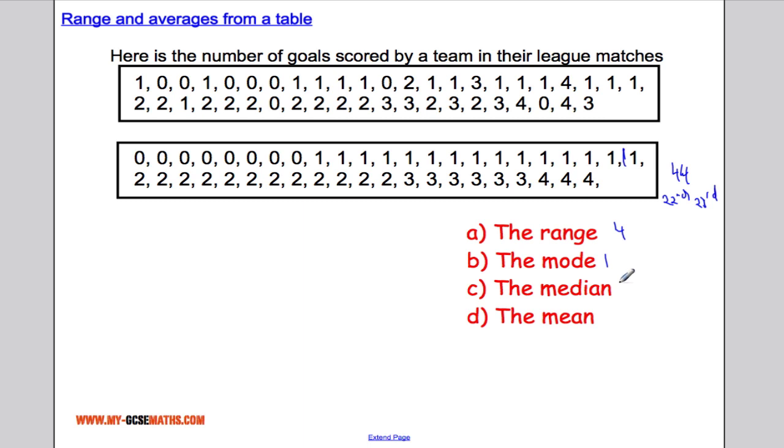Which is right in there. So the median is 1, and the mean we'd work out by adding these all together and then dividing by 44.